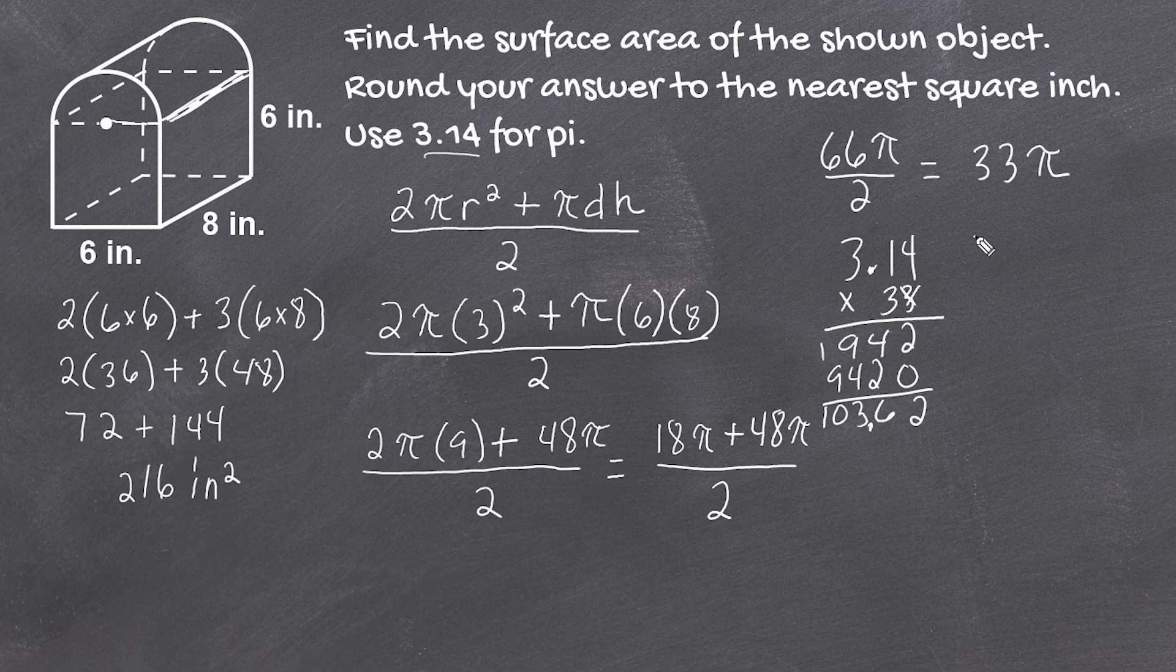The exposed surface area of the half cylinder is 103.62 square inches. We add that to the exposed surface area of the rectangular prism, which is 216 square inches, giving us a total surface area of 319.62 square inches.